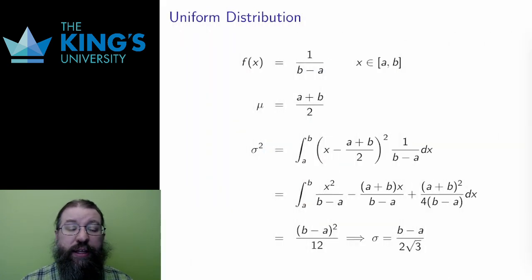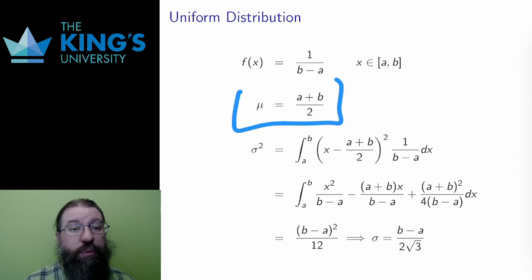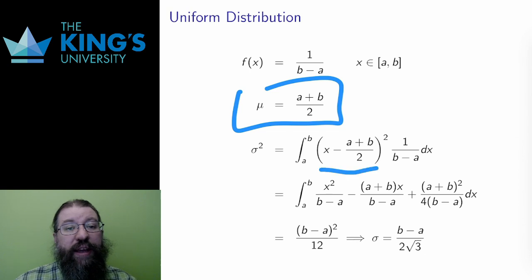Here's the calculation for the uniform distribution on a to b. The mean was a plus b over 2, the halfway point of the interval. So then I need to integrate x minus a plus b over 2 squared times the distribution. I expand this binomial and get three terms, which I can split up using linearity.